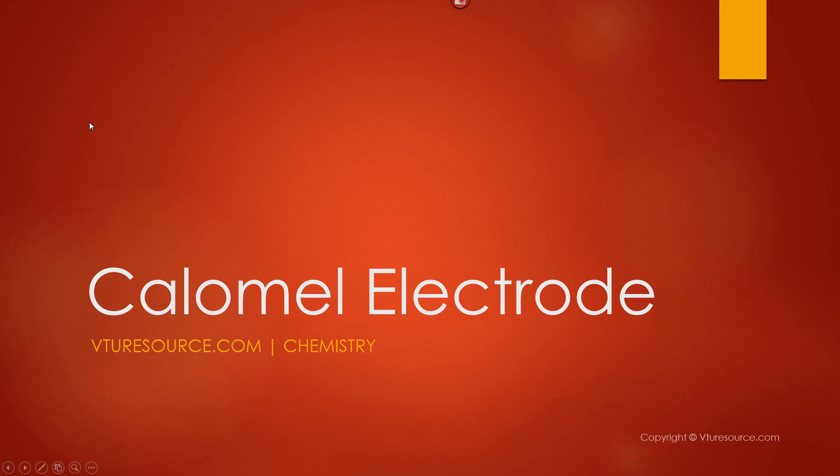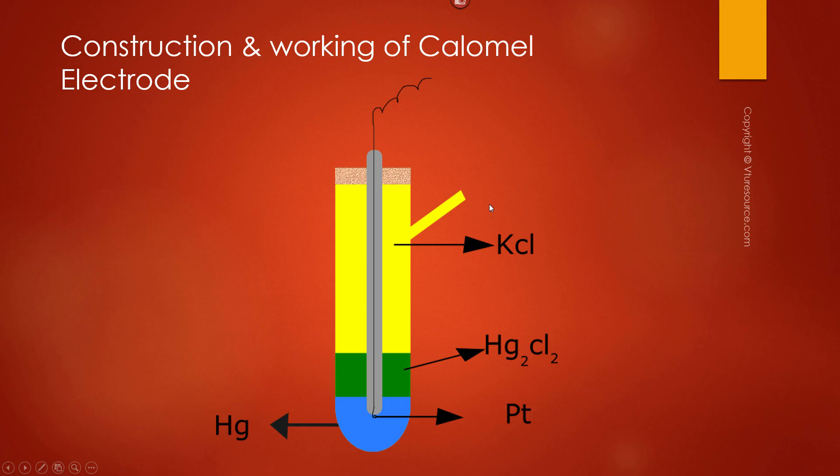Calomel electrode is an example of a reference electrode and an example of a metal-metal salt ion electrode. Let us discuss the construction and working of calomel electrode. Calomel electrode is made up of a glass tube with a side tube.